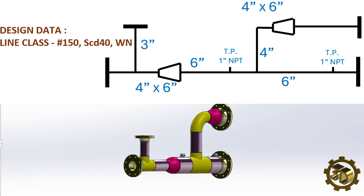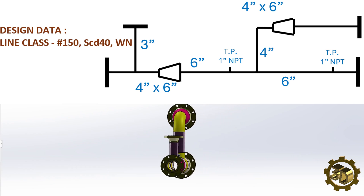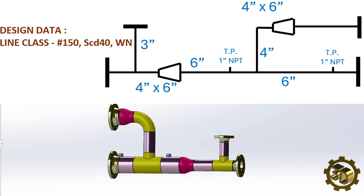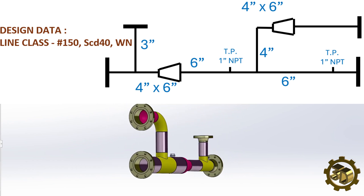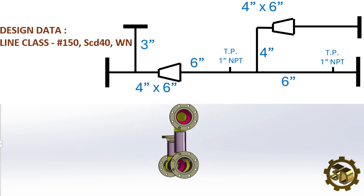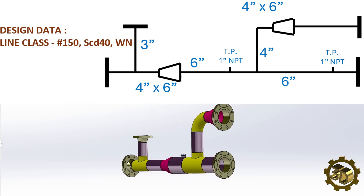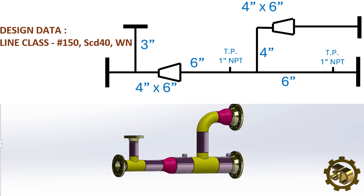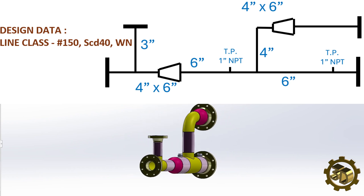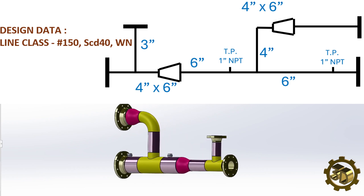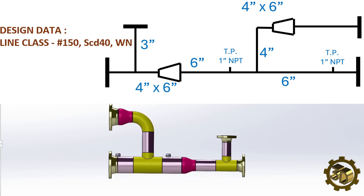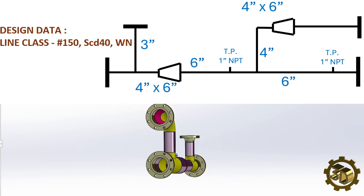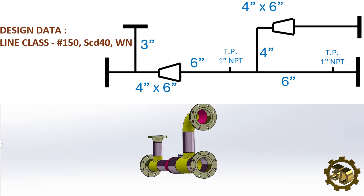P&IDs are schematic representations of pipelines, equipment, instrumentation, and control systems found in process environments like oil refineries, chemical plants, paper mills, etc. The symbols in P&IDs represent the various equipment and devices in the process.